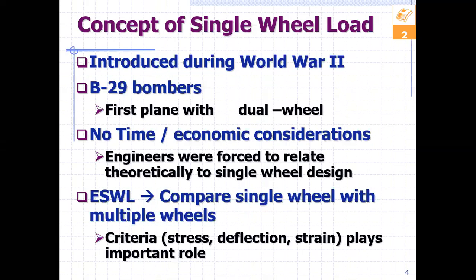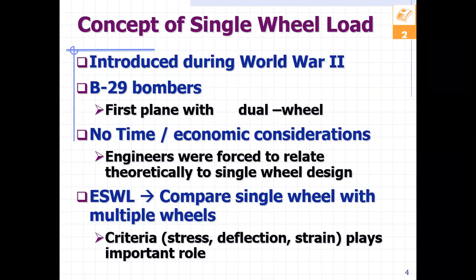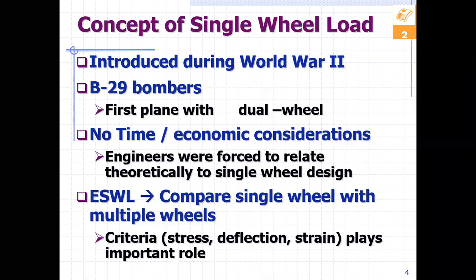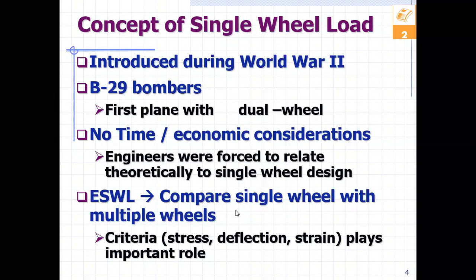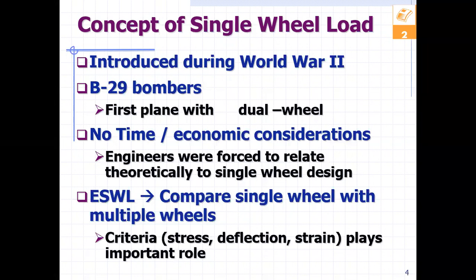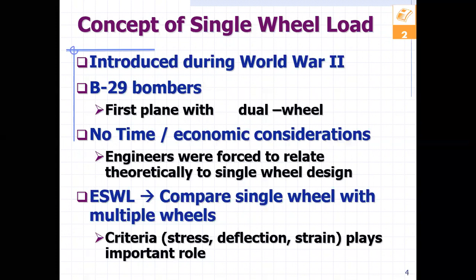This started back in World War II because they needed to come up with an approach to design the thickness of runways for their planes. They came up with the concept of the equivalent single wheel load by comparing the single wheel load with multiple wheels. This is based on one criterion, such as stress, deflection, or strains.